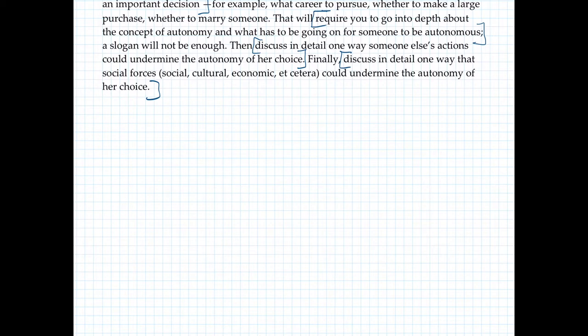Probably either the setup or the discussion of autonomy is going to need to come first — so this could be number one or number two. You're either going to start with the setup of the example, or you're going to start off by talking about autonomy and then get into the particular example. But those are the things you're going to have to do up front, and you can do the sort of problem cases after.